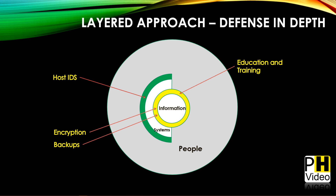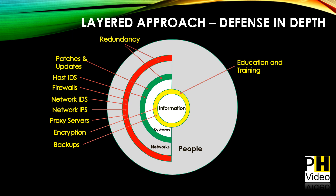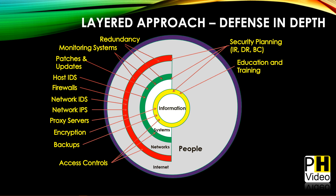At the systems layer, we might have host-based intrusion detection systems and patches and updates for Windows, Linux, or Mac. Then we have networks — things that connect our systems together — where we might have proxy servers, network intrusion detection systems, network intrusion prevention systems, firewalls, redundancy, monitoring, and access controls. We also have security planning for incident response, disaster recovery, and business continuity. The outermost layer is the internet, where policies and laws come into play.